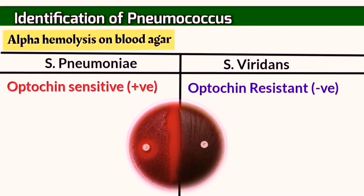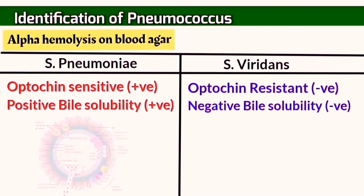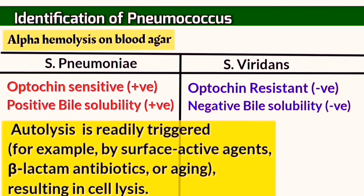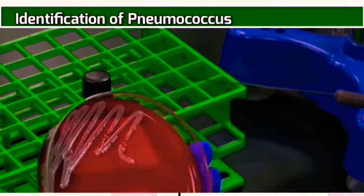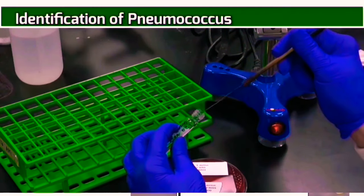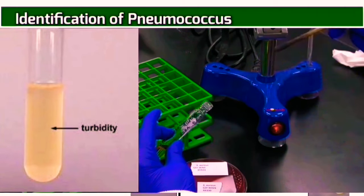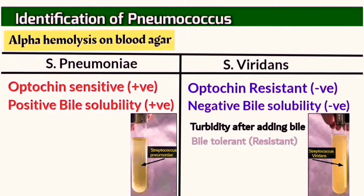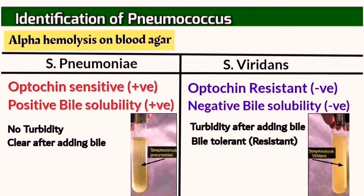Another differential test is the bile acid sensitivity test. The Strept pneumoniae autolysis itself in the presence of antibiotics or any other unsuitable environmental condition, including the presence of bile acids. The test involves inoculating Strept pneumoniae into a tryptone growth media, then incubating it for 24 hours. The growth will show obvious turbidity due to bacterial growth. Bile acid is then added and incubated for another 15 minutes. If the growth remains turbid, the bacteria is resistant, such as Strept viridans. If the growth turns clear, that indicates the death of the bacteria due to its sensitivity to bile acids, as in the case of Strept pneumoniae.